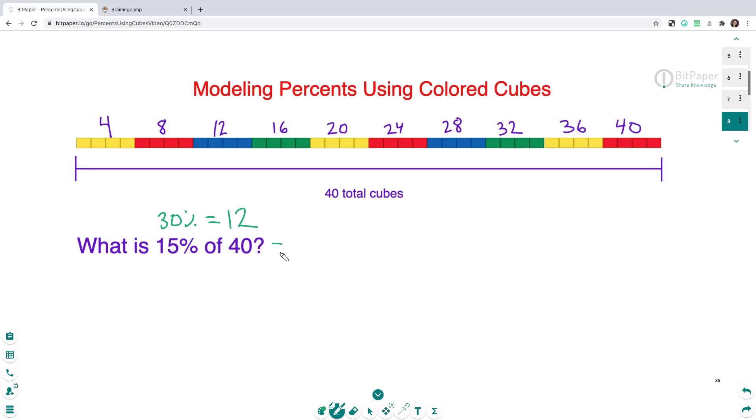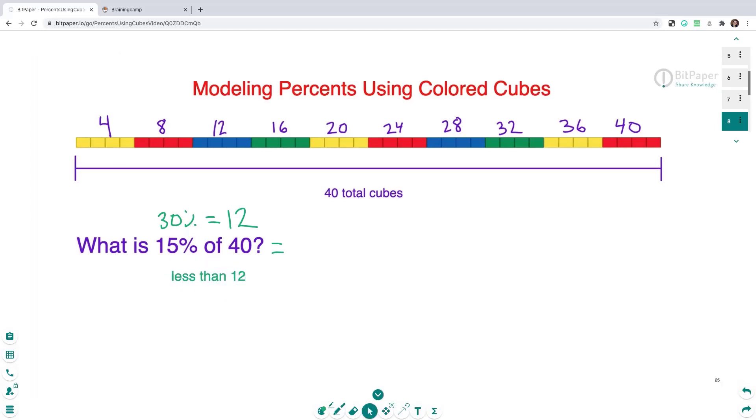So that means that 15% of 40, well, I know that if I just estimate that, it's less than 12. So I know my answer is less than 12. And I know that it has to be greater than 8, though, because 20% is 8. So my answer is less than 12 and greater than 8.